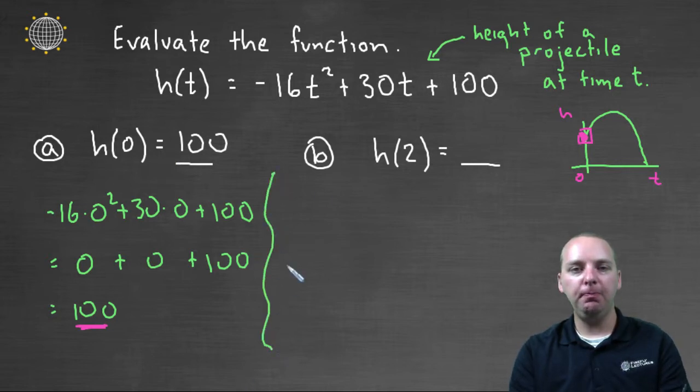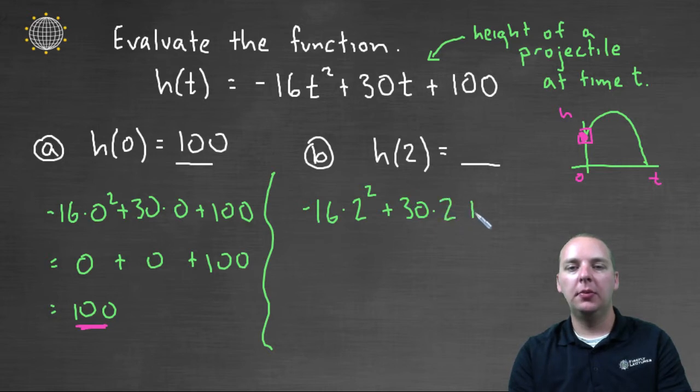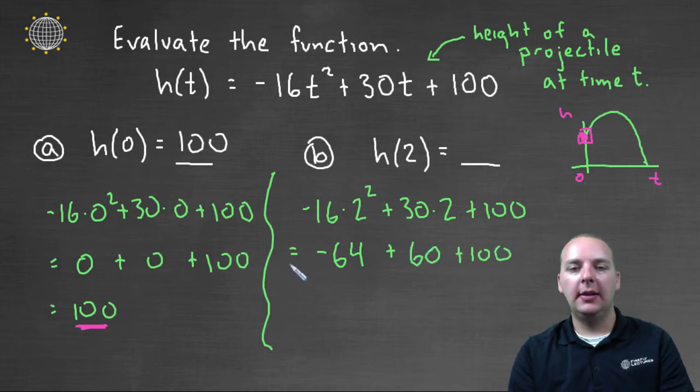Let's try the same thing with h of two. We'll take negative sixteen times two squared plus thirty times two plus one hundred. Two squared is four, and four times negative sixteen is negative sixty-four, plus thirty times two which is sixty, plus one hundred. And then negative sixty-four plus sixty would make negative four, plus one hundred. And then final answer, negative four plus a hundred would be ninety-six.